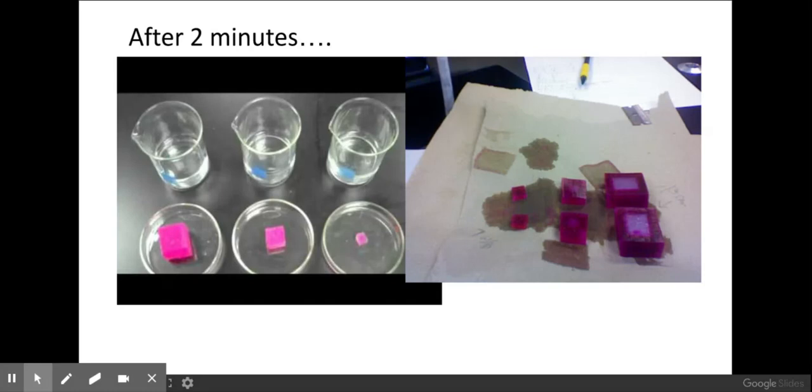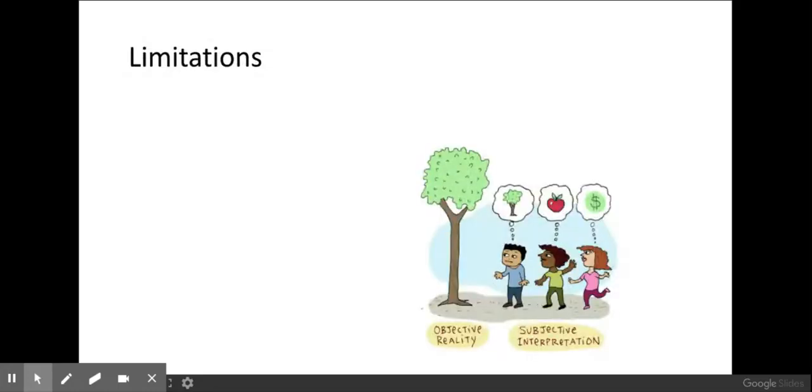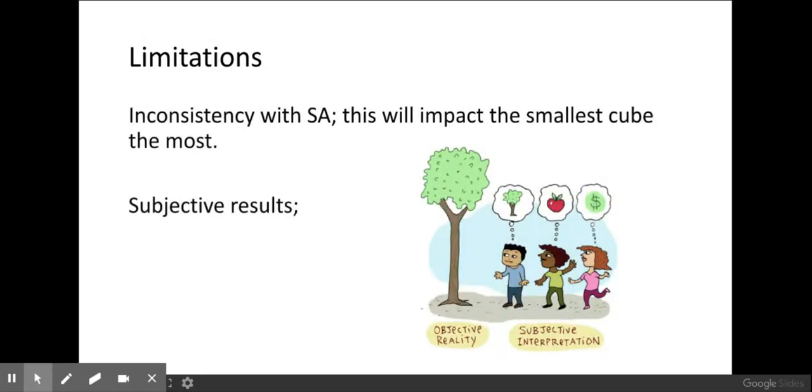Now there are a couple of things wrong with this investigation, limitations that we have to put on our results. First thing is that there is going to be inconsistency with the surface area. You're cutting these cubes with a scalpel so it's going to be very hard to get all those cubes exactly the same length on every side. Also the results are very subjective. It's up to you to decide how far that purple pigment has gone in, which may differ to someone else who's looking at the same cubes. So it's well worth paying attention, and I have seen these on mark schemes.